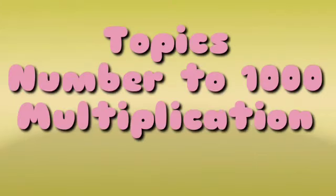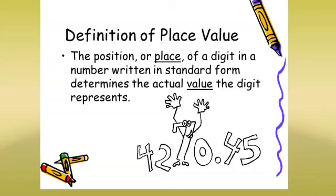Let's discuss the first one, place value. The position or place of a digit in a number written in standard form determines the actual value the digit represents. Let's have a quick review of what are even and odd numbers.